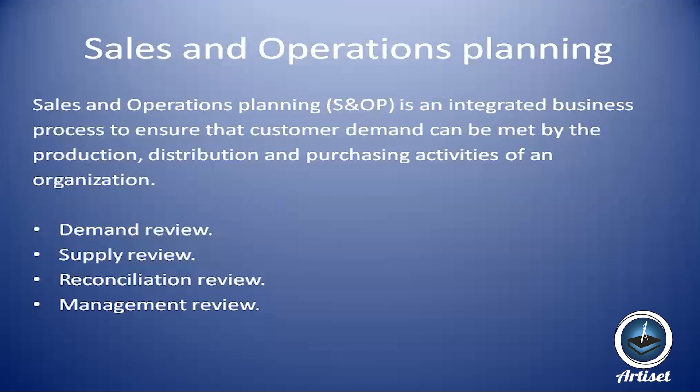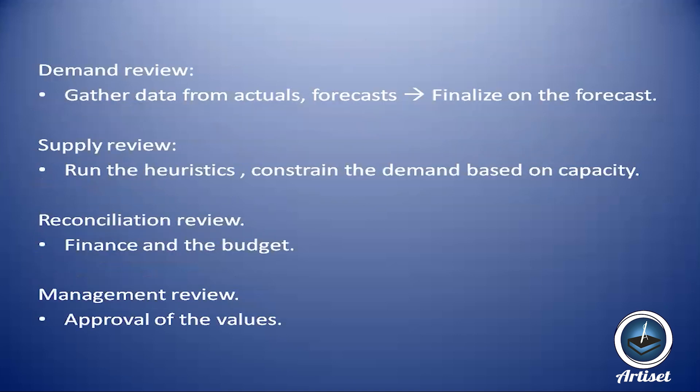There are four different processes in Sales and Operations Planning. First is the demand review: demand planners, sales teams, and marketing teams all gather data from actuals or forecasts. The demand planner gives a forecast, the sales team gives their numbers, the marketing team gives their values, and forecasting algorithms generate their own values. There can be many inputs depending on your organization.